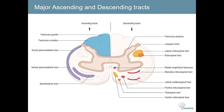Here are the major ascending and descending tracts. On the left-hand side you can see all the ascending sensory tracts, and on the right-hand side you can see the descending tracts. We'll be focusing on the corticospinal tracts; however, you can take a look at all the other tracts in the further reading material provided at the end.